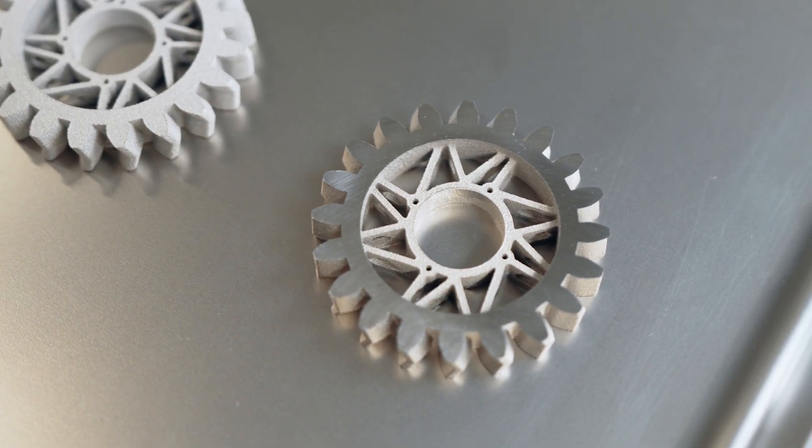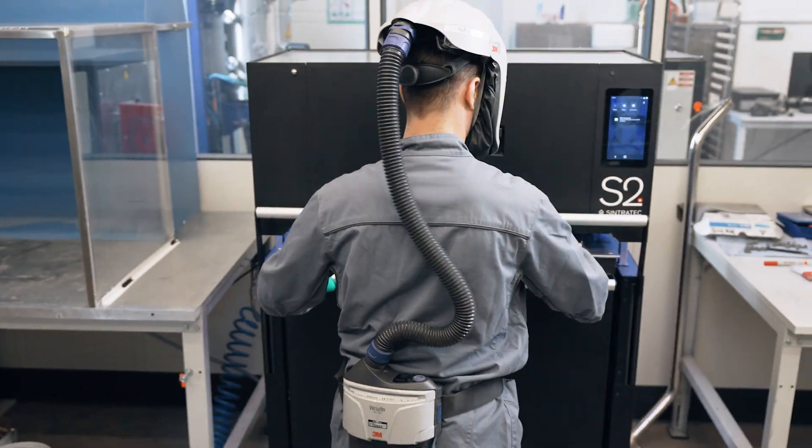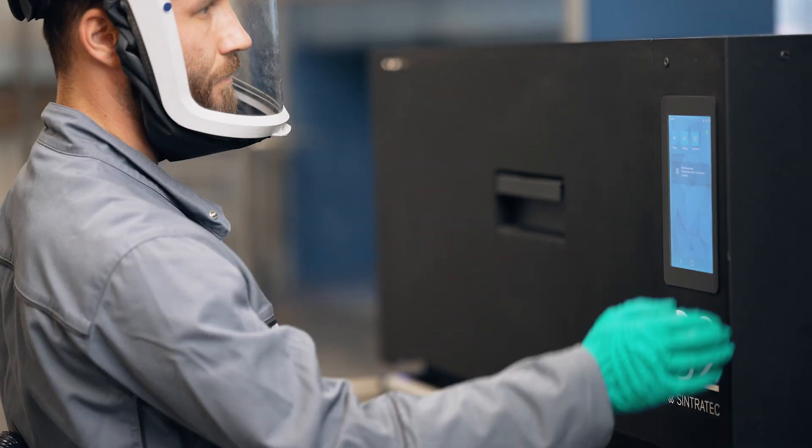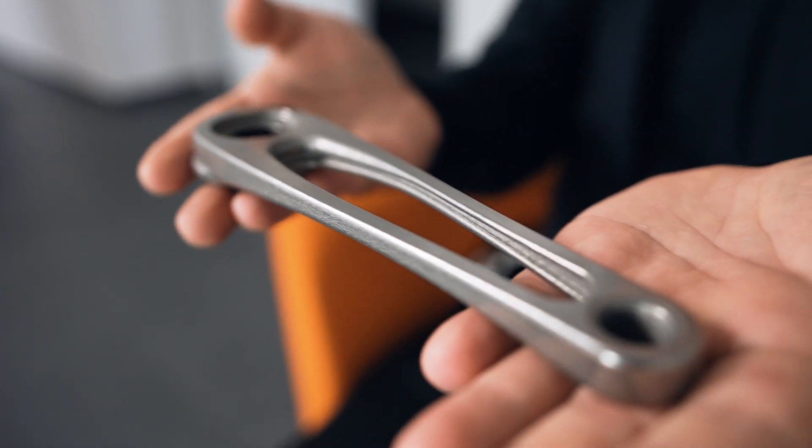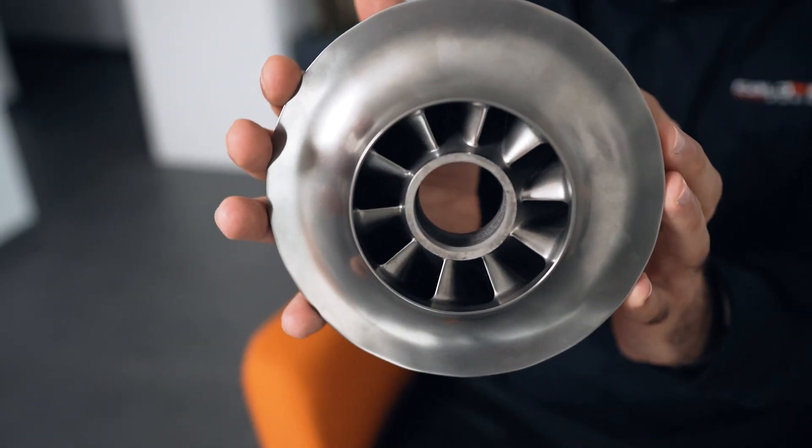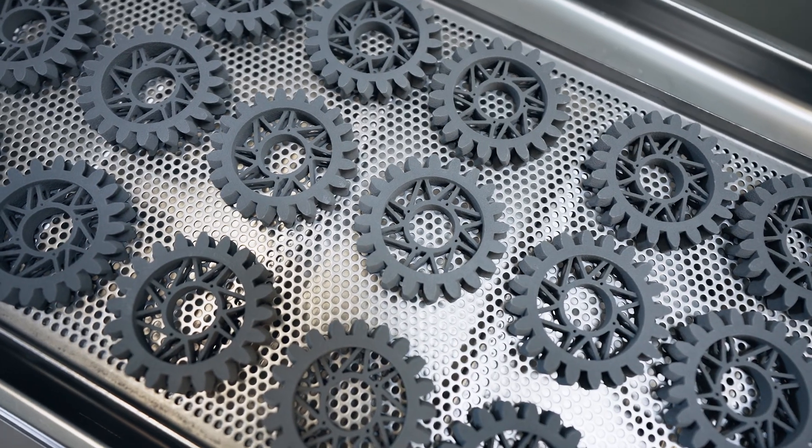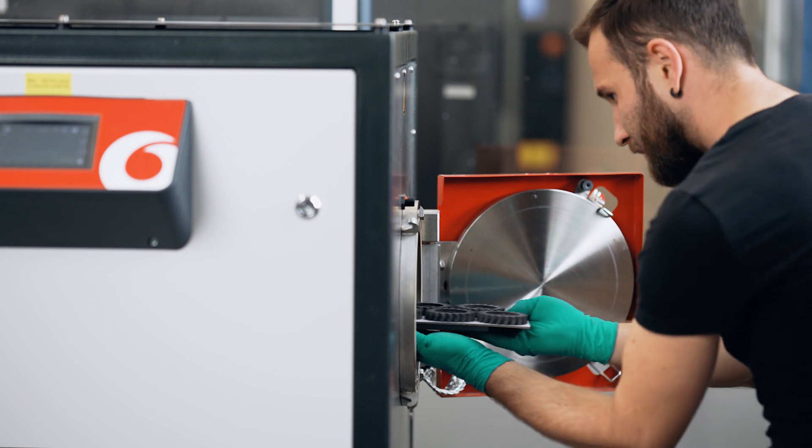Cold Metal Fusion is a process chain that allows you to use our materials in an SLS printer by Sintratec that enables you to print metal parts on a polymer printer, de-bind these parts and sinter them in a conventional sintering furnace.